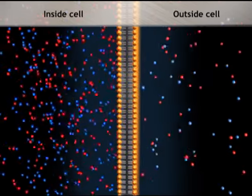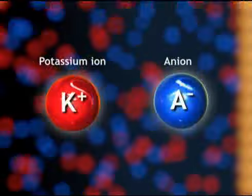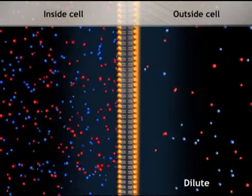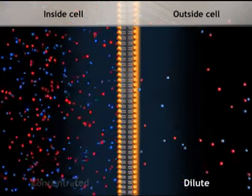Both chambers contain a potassium salt dissolved in water as potassium ions and anions. The salt is 20 times more dilute on the outside of the cell than the inside,